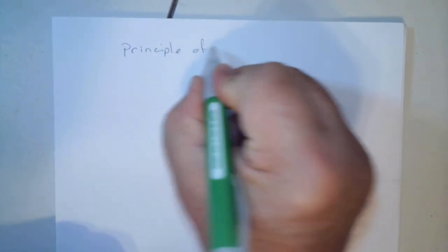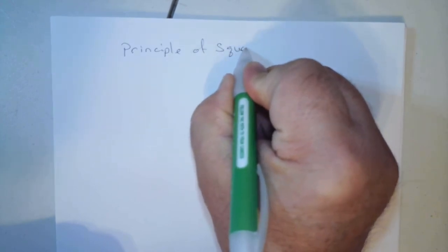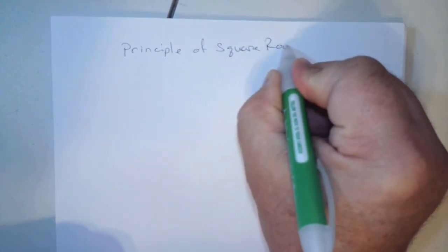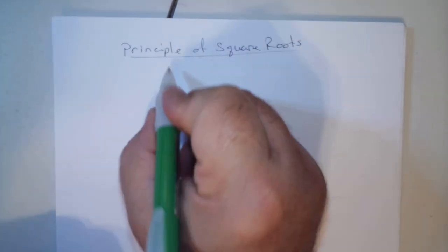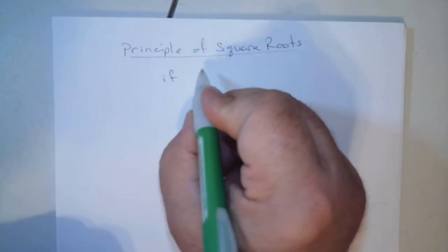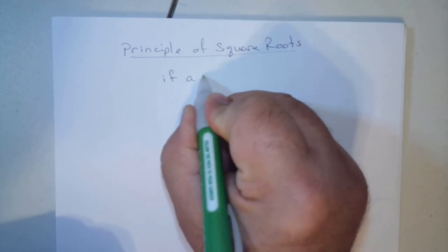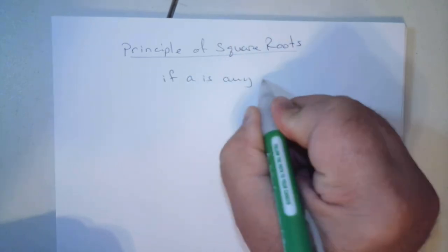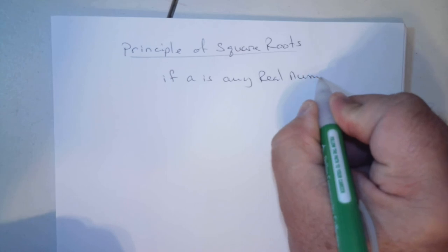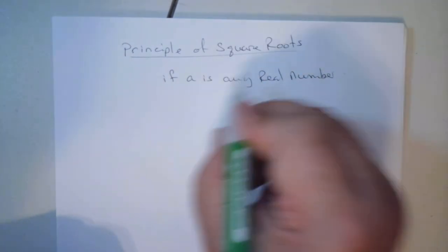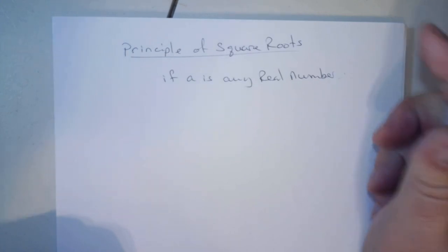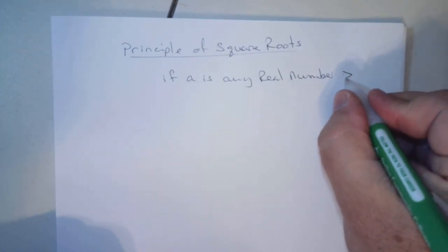The principle of square root. It says this. If a is any real number, any non-zero, non-negative, so any real number greater than 0.